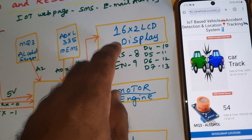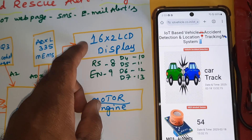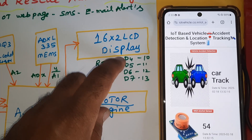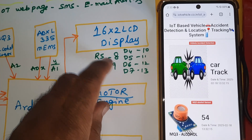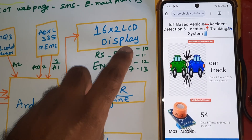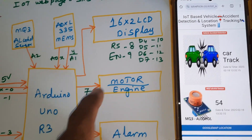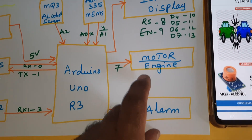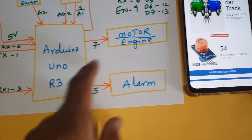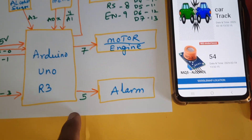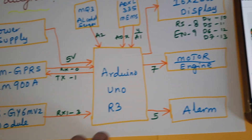The 16x2 LCD display is connected to RS, Enable, D4, D5, D6, D7 on GPIO pin numbers 8, 9, 10, 11, 12, and 13. The motor is connected to the 7th pin and the alarm is connected to the 5th pin. This is the total block diagram of the project.